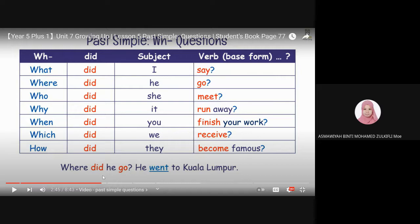Whereas, manakala, kalau dibuat ayat macam ni, where does he go? Does adalah present tense. Okay. Kalau present tense, jawapan dia pun kena dalam present tense. He, present tense untuk went apa? Go. Kalau he go ke goes? He goes to Kuala Lumpur.